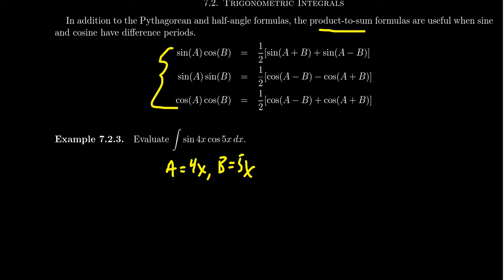Now for this example, evaluate the integral of sine 4x cosine 5x dx. That's going to be the first type that we're going to use. Other types, if we had like sine 4x sine 5x, the second type would be useful here. So you can come up with similar examples for the third one there. So applying this identity here with sine, with A being 4x and cosine being 5x, just use the appropriate identity right here.